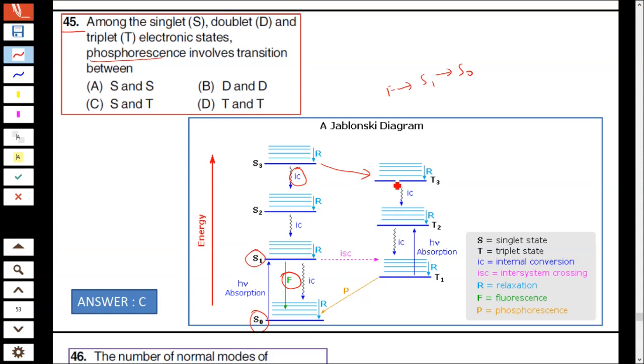Whereas intersystem crossing: electron goes from singlet to triplet state, it's called intersystem crossing. From triplet state T1 to ground state singlet state is known as phosphorescence. Phosphorescence is T1 to S0. Hence option C is correct, singlet to triplet state. Transition between singlet to singlet state is fluorescence.